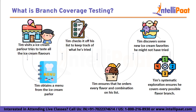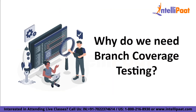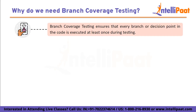Just as Tim wanted to experience all ice cream options, branch coverage testing aims to test all the different branches or decision points within a program's code to verify its functionality. Branch coverage testing is a critical aspect of software testing that helps to ensure the reliability, robustness, and correctness of software applications. It involves examining the code to verify that each branch or decision point is executed at least once during testing. A branch in the code refers to a point where the program can take one of two or more paths based on a condition.